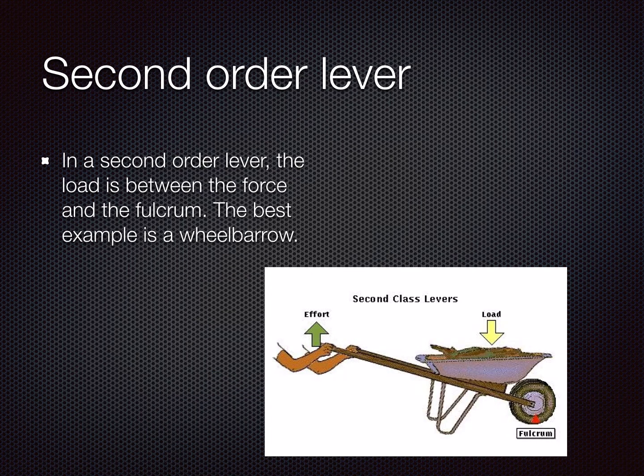The second order lever is quite different. In this one, the load is between the force and the fulcrum. So the best example of this, as you can see in the picture, is the wheelbarrow. The load is in the middle, the fulcrum's at the front and the effort's coming from behind. They can be reversed in that way but it won't really matter — it'll be the same for this one.